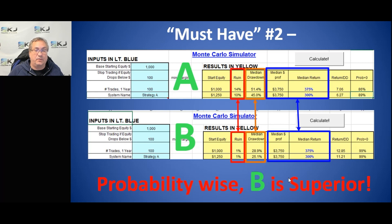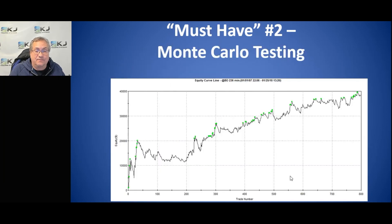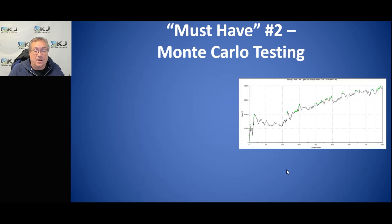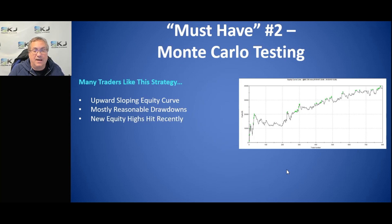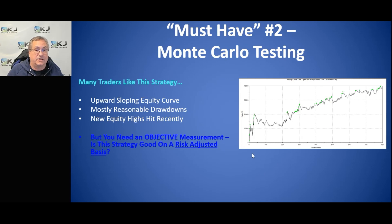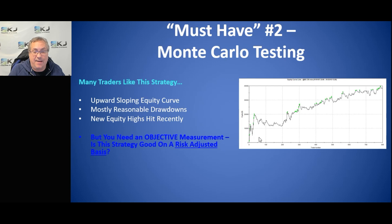Here's a related situation: let's say you had this equity curve — would you trade it? A lot of traders like it because it's going up and to the right and drawdowns seem fairly reasonable. But there are bad things: there are a couple hundred trades where it's not making money, or it made money and then gave it back. It's hard to tell from just looking at the equity curve whether this is good or not. You need an objective measurement — you can't just eyeball it.